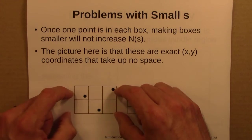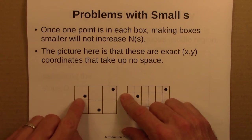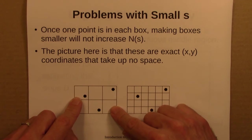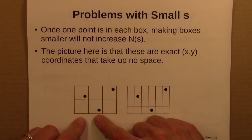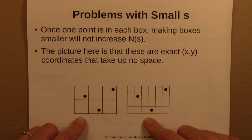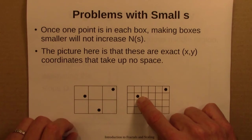So once the boxes are small enough that you always have one pixel, one dot in every box, if you make the boxes smaller, that's not going to change this fact. So both of these cases, N(s) would be three, even though these boxes are half the size of that one. And again, the picture here is that these dots actually don't take up any space.